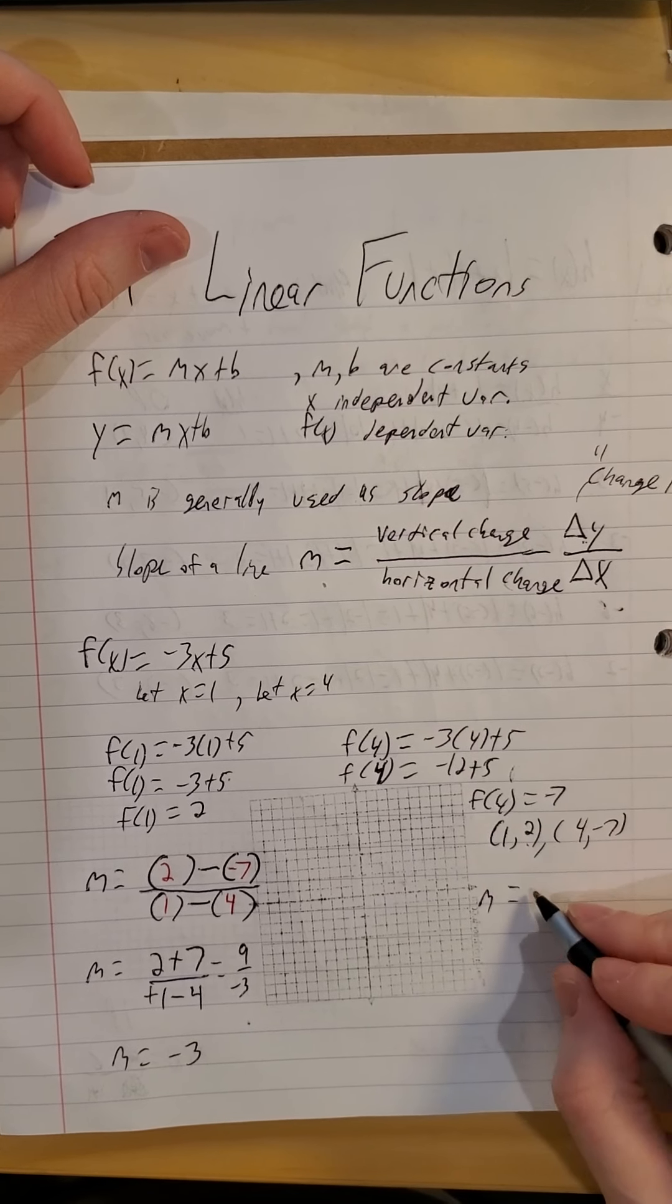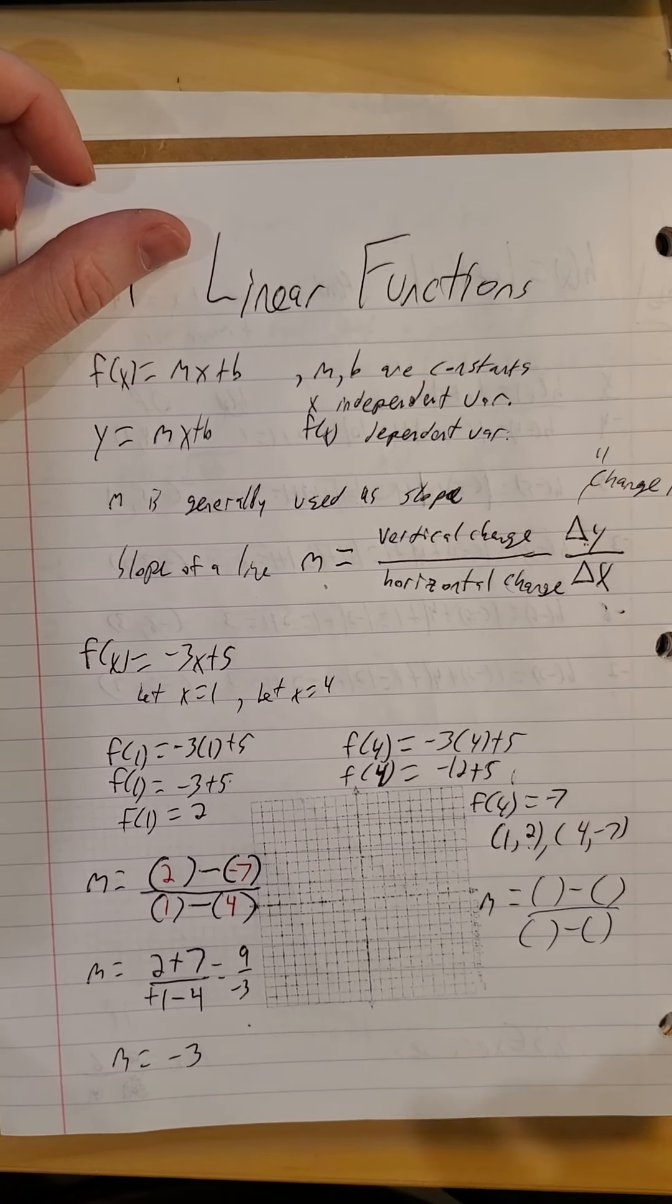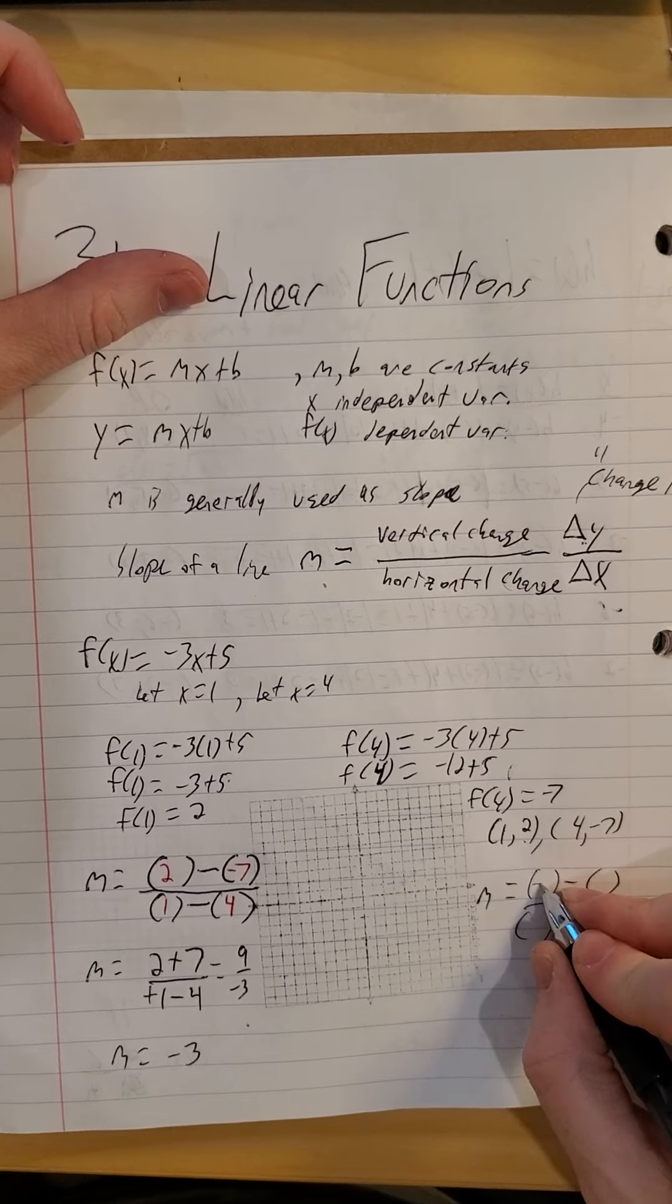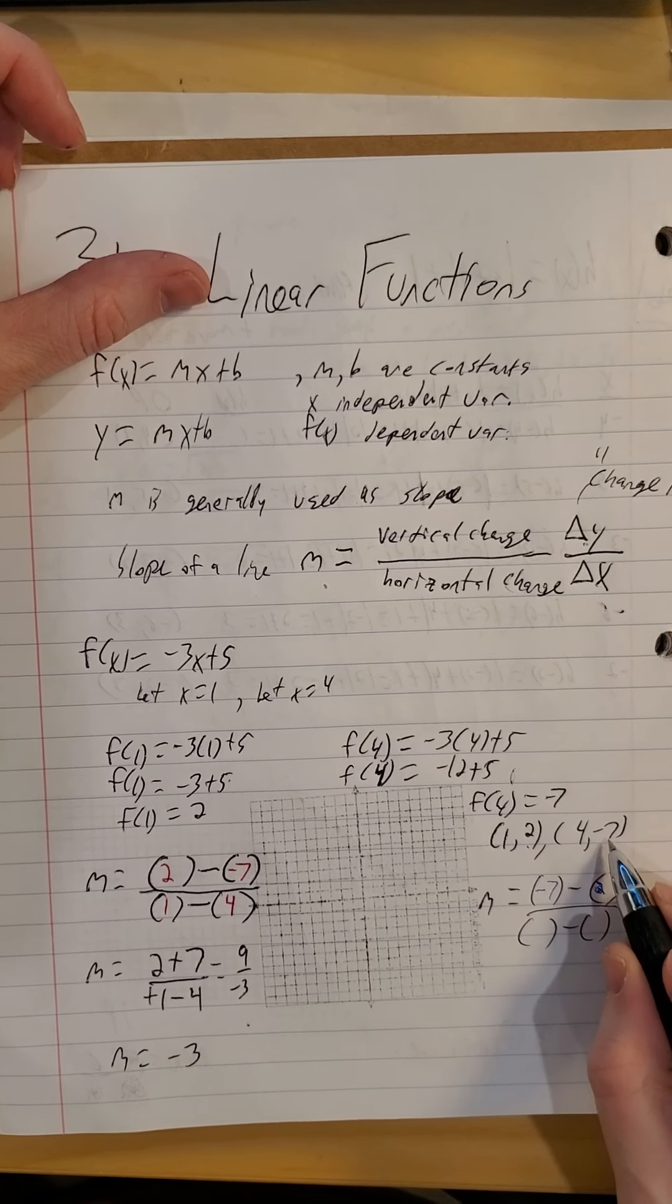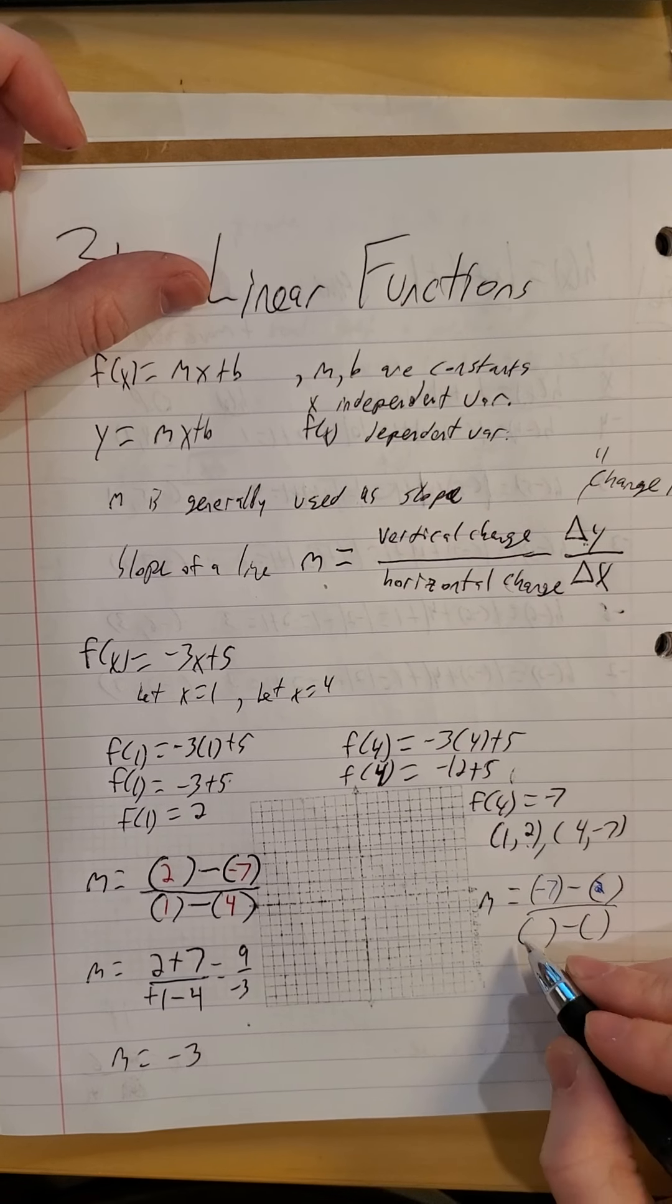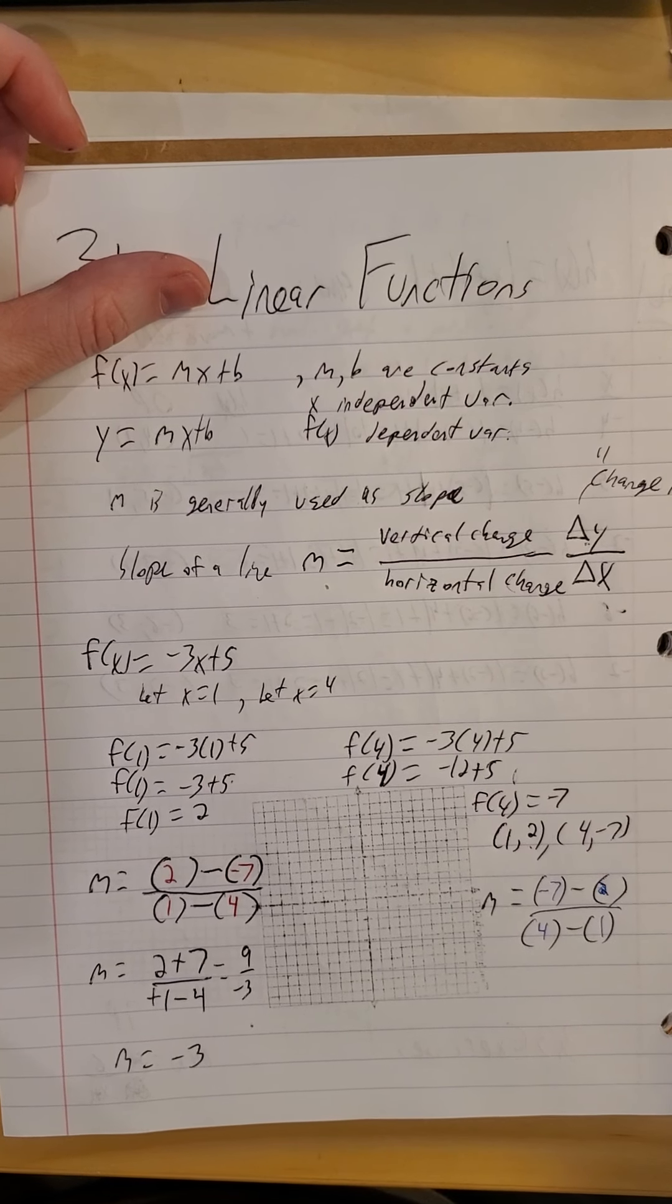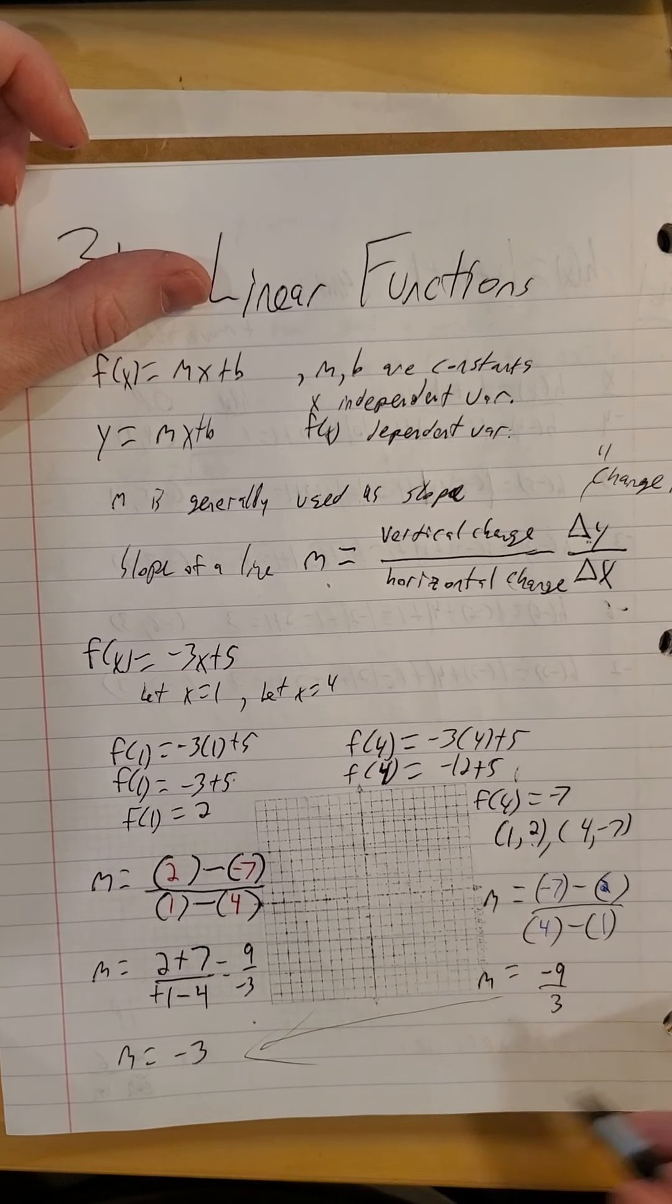What if I picked the negative 7 to go first? So notice I'm using these parentheses, the reason being, I always have to have subtraction, but I also might have negative signs included in the problem. And if I don't use these parentheses, I'm much more likely to have a sign error in the problem. So here's the negative 7, here's the 2. Now, as long as I stay consistent, I picked the negative 7 to go first at the top, so the 4 has to go first at the bottom. Just like last time I picked the 2 to go first at the top, its partner, the 1, had to go first at the bottom. So a 4 and a 1. So our slope then, negative 9 over positive 3, we still get the same thing of m equals negative 3.